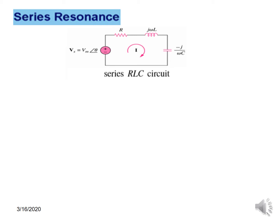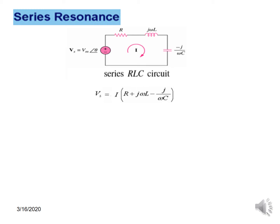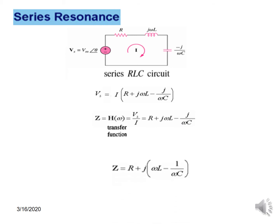For series resonance, we can write the voltage-current relation V = IZ, where Z equals R + jωL − j/ωC. This term Z is also called the transfer function H(ω): the voltage divided by current, which equals R + jωL − j/ωC. Taking j as common, we have in the bracket ωL − 1/ωC.